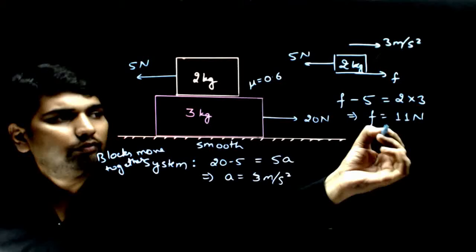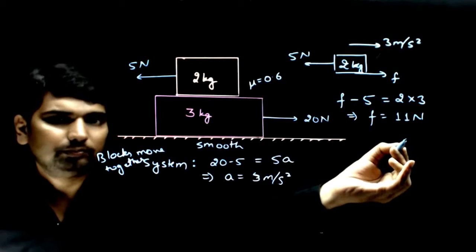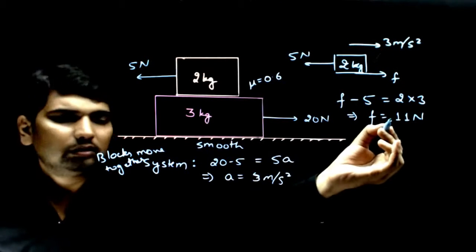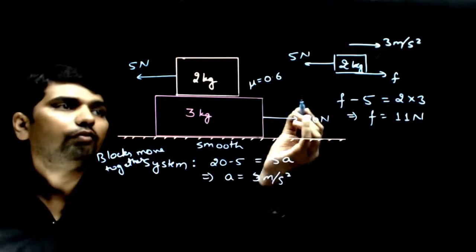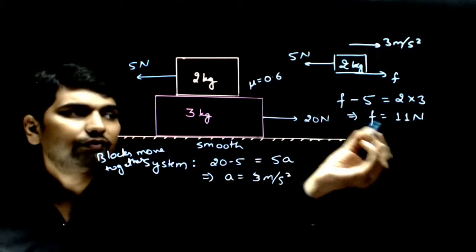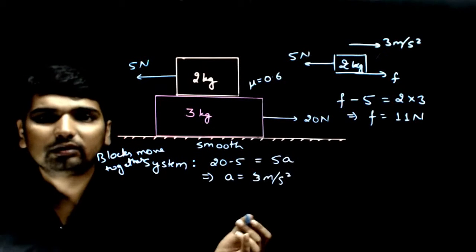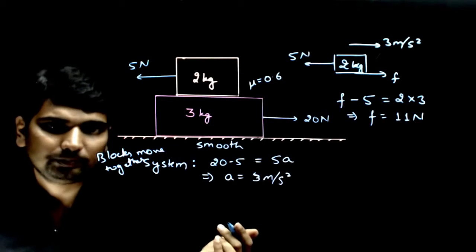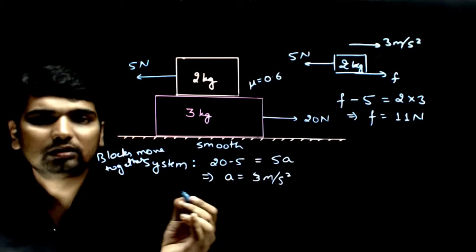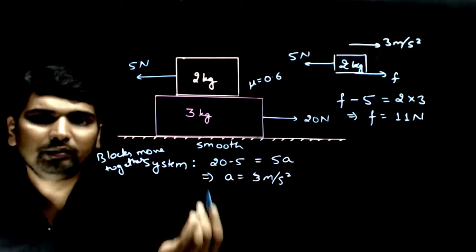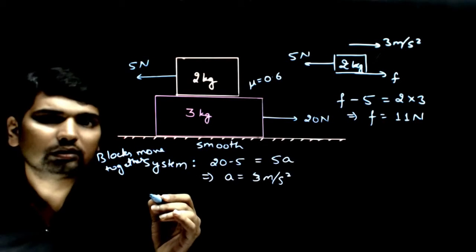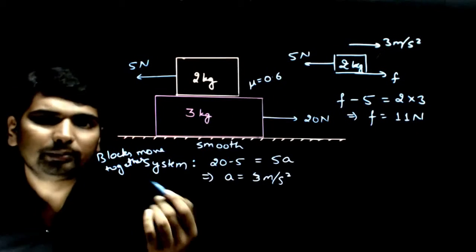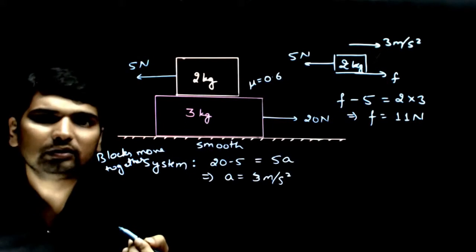But we have to check whether this friction is possible or not. To verify whether this answer is correct or wrong, we have to check if this friction is less than limiting friction or exceeds it. If it exceeds the limiting friction, our case that blocks move together will be false, and we will have to solve another case considering both blocks are moving separately and the friction between them is kinetic friction.